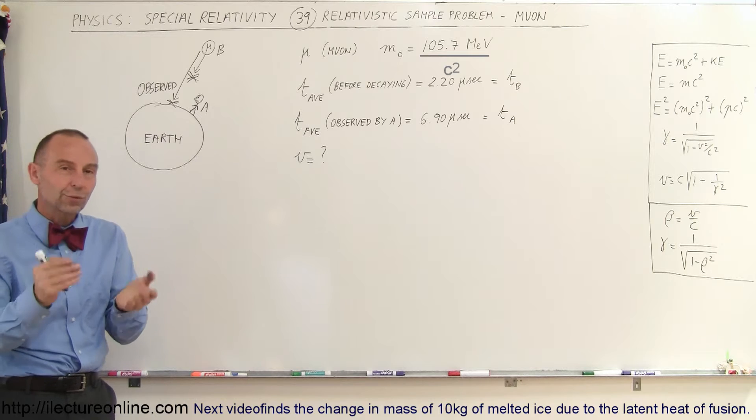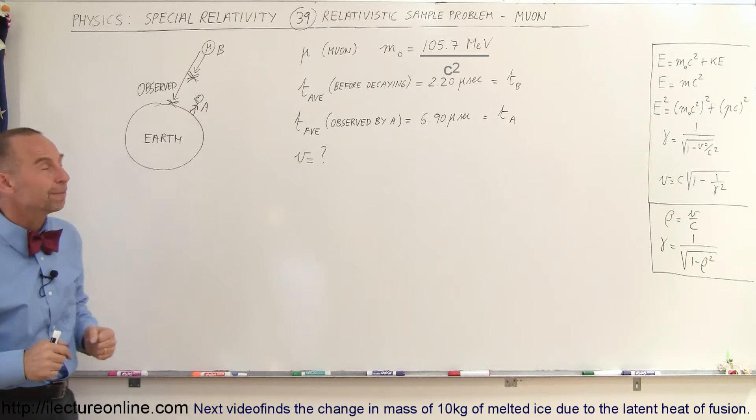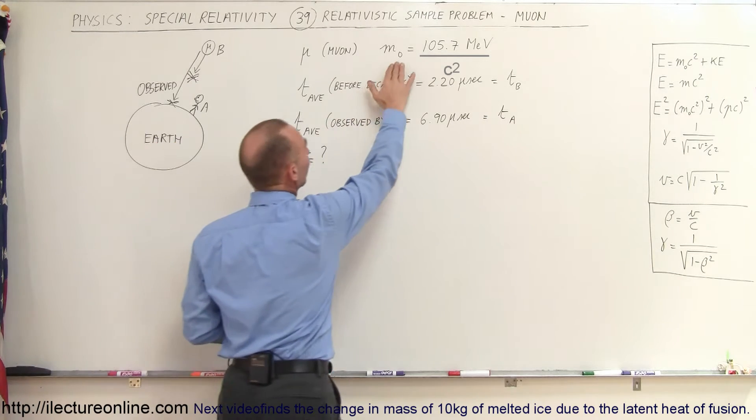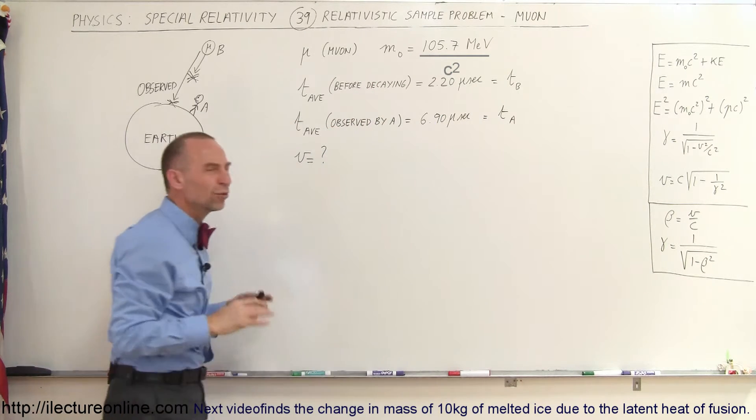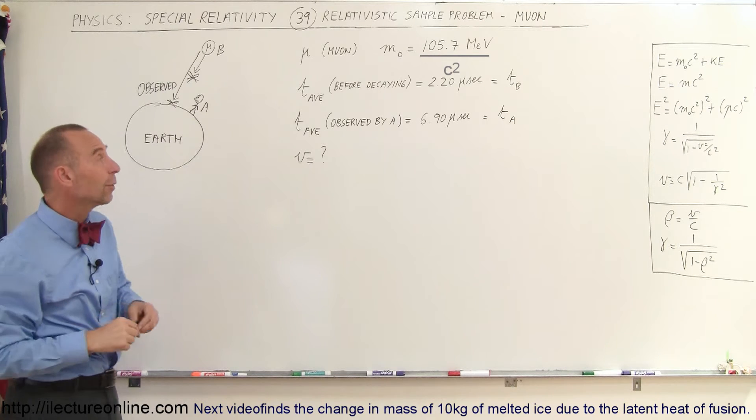We can show through a muon that the time dilation is indeed a real thing. For example, the muon, which has a rest mass of 105.7 MeV, which makes it about 200 times the size of an electron in mass, in rest mass.